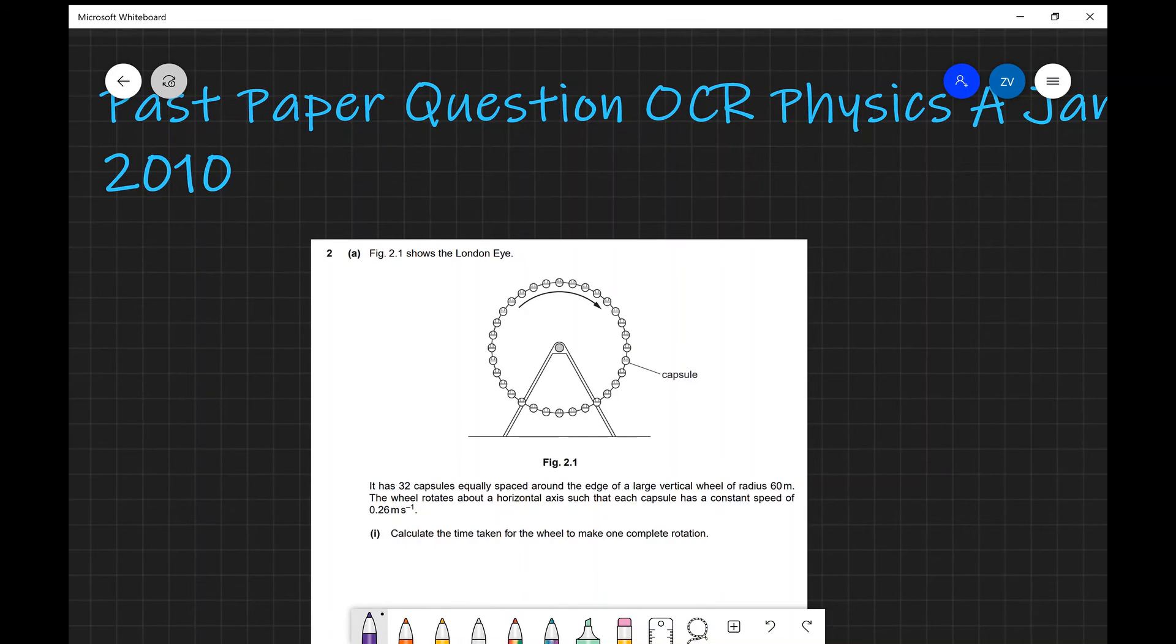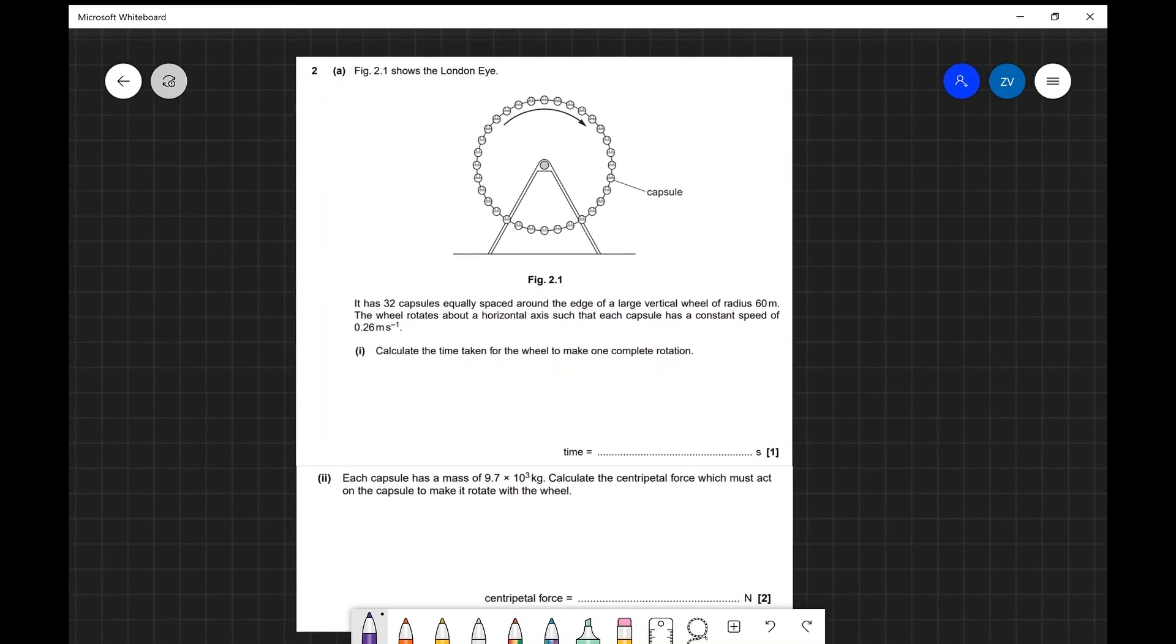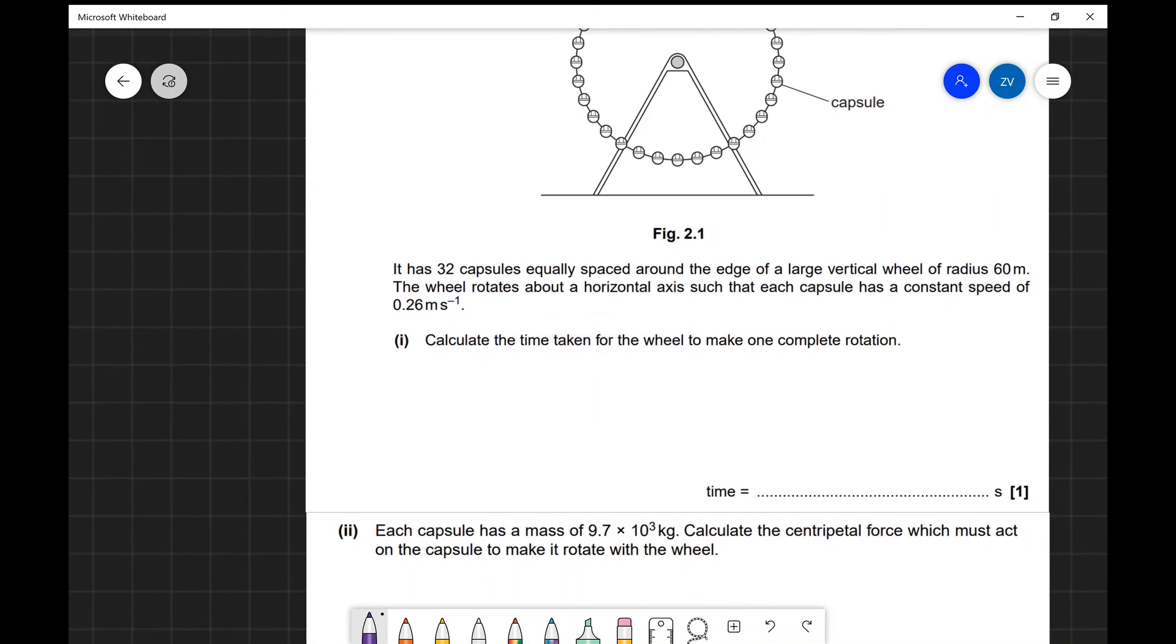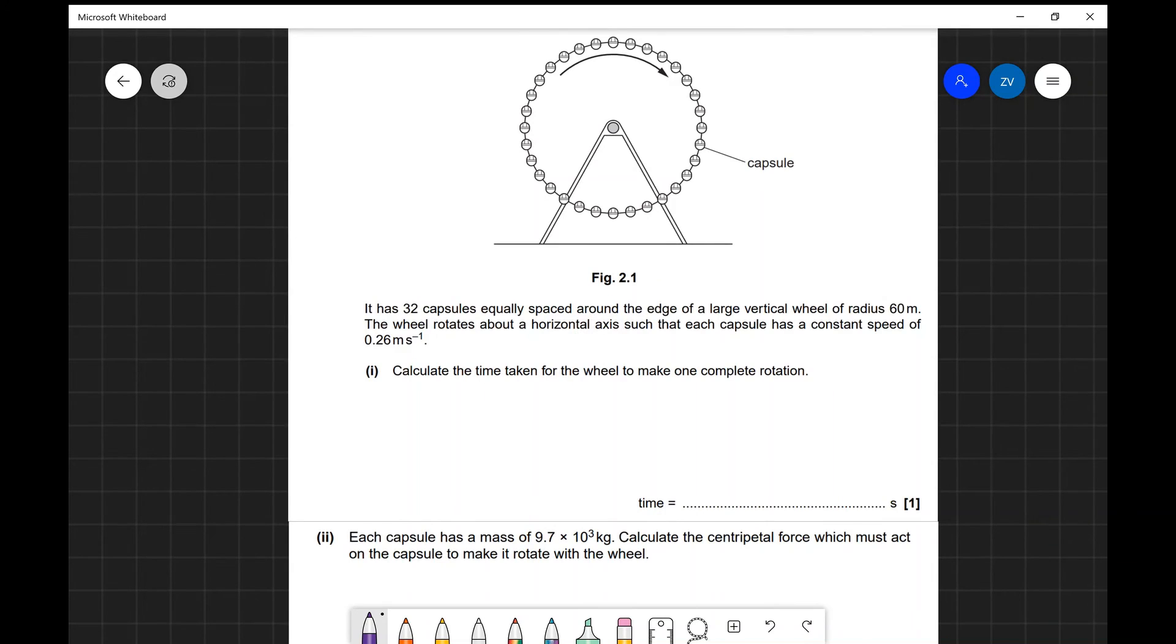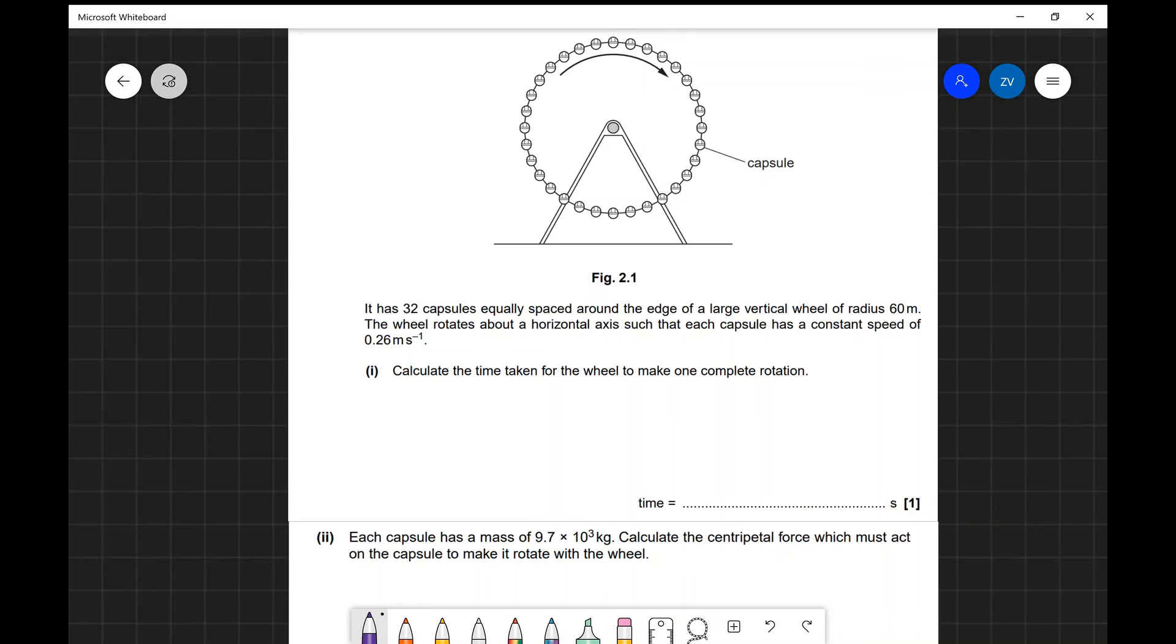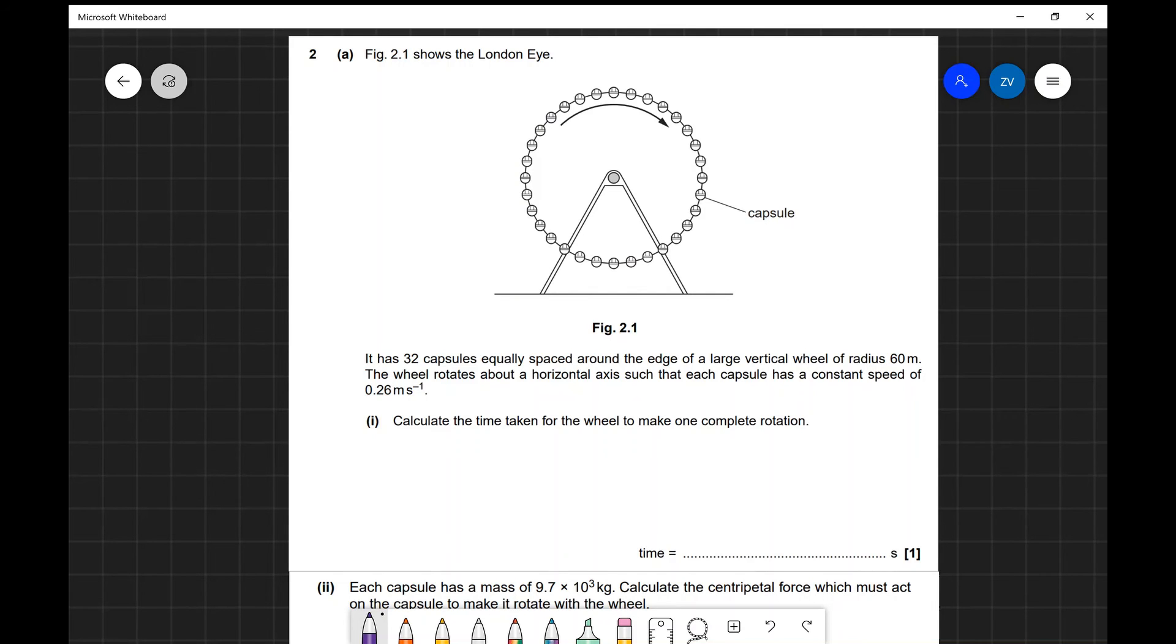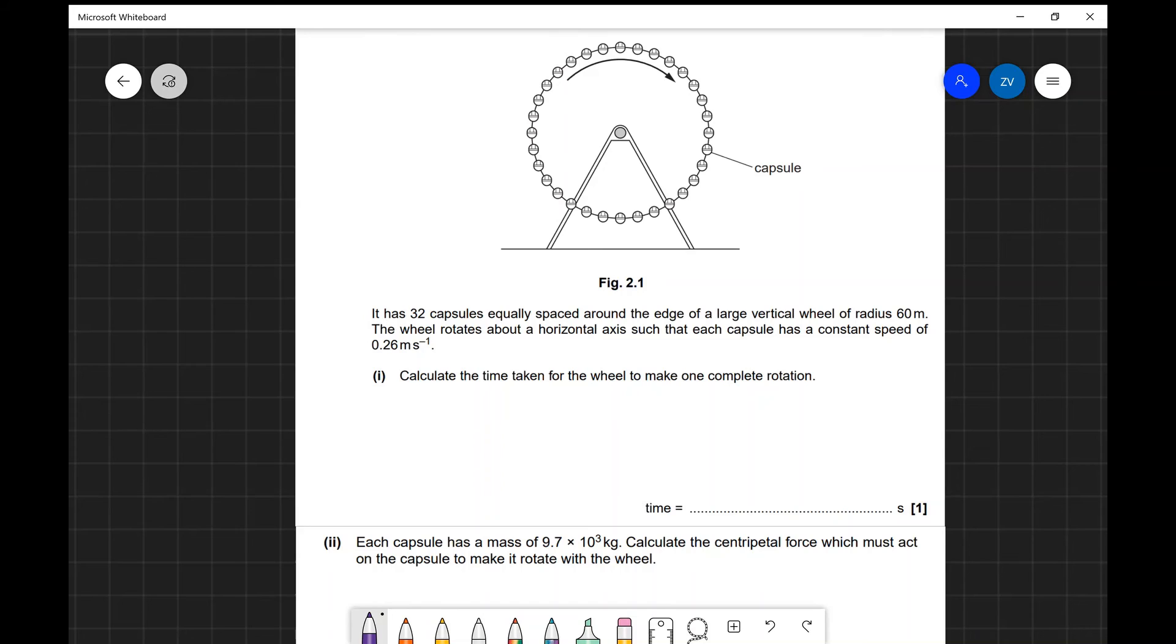So let's have a look at a past paper question from January 2010. So we have figure 2.1 which shows the London Eye. It has 32 capsules equally spaced around the edge. We've got the radius which is 60 meters. The wheel rotates about a horizontal axis such that each capsule has a constant speed of 0.26 meters per second. So if you are taking a ride on the London Eye, you'll be traveling at approximately 0.26 meters per second. Calculate the time taken for the wheel to make one complete rotation.